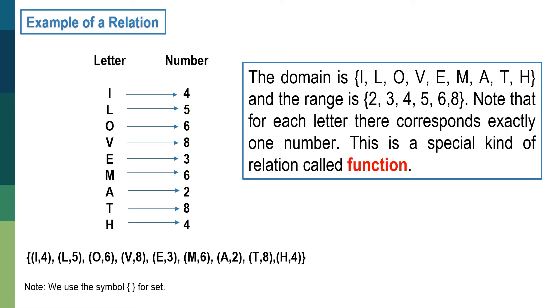Note that for each letter, there corresponds exactly one number. This is a special kind of relation called a function. So meaning to say, if a relation indicates a one-to-one relationship, it indicates that it is a special type of relation, and that is a function.